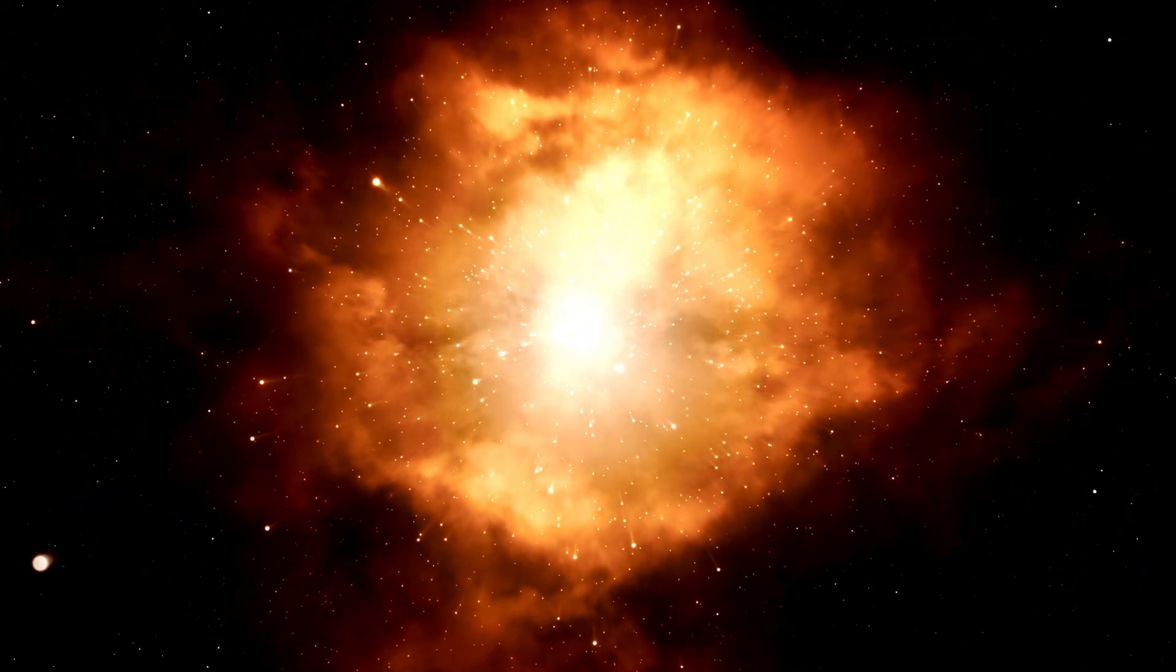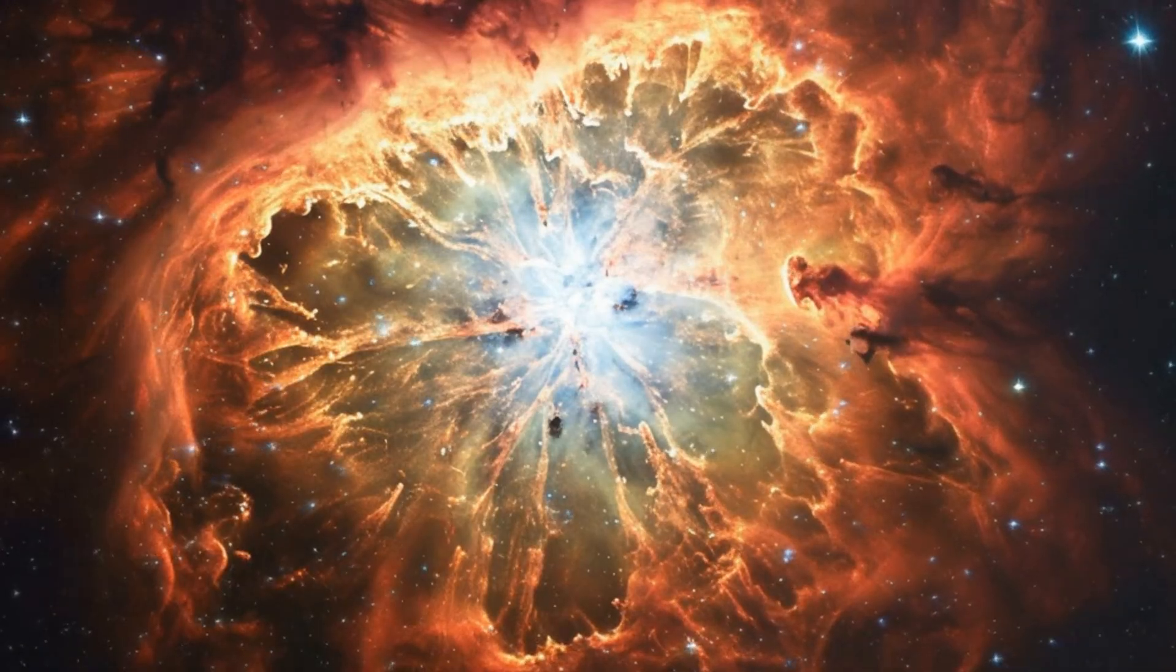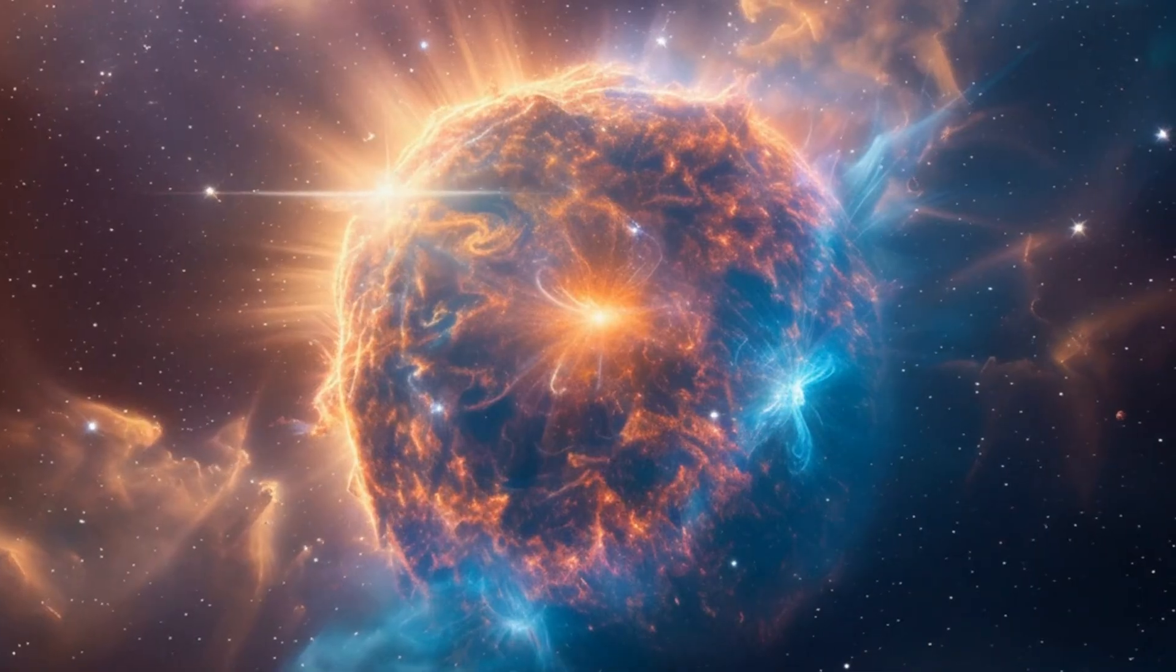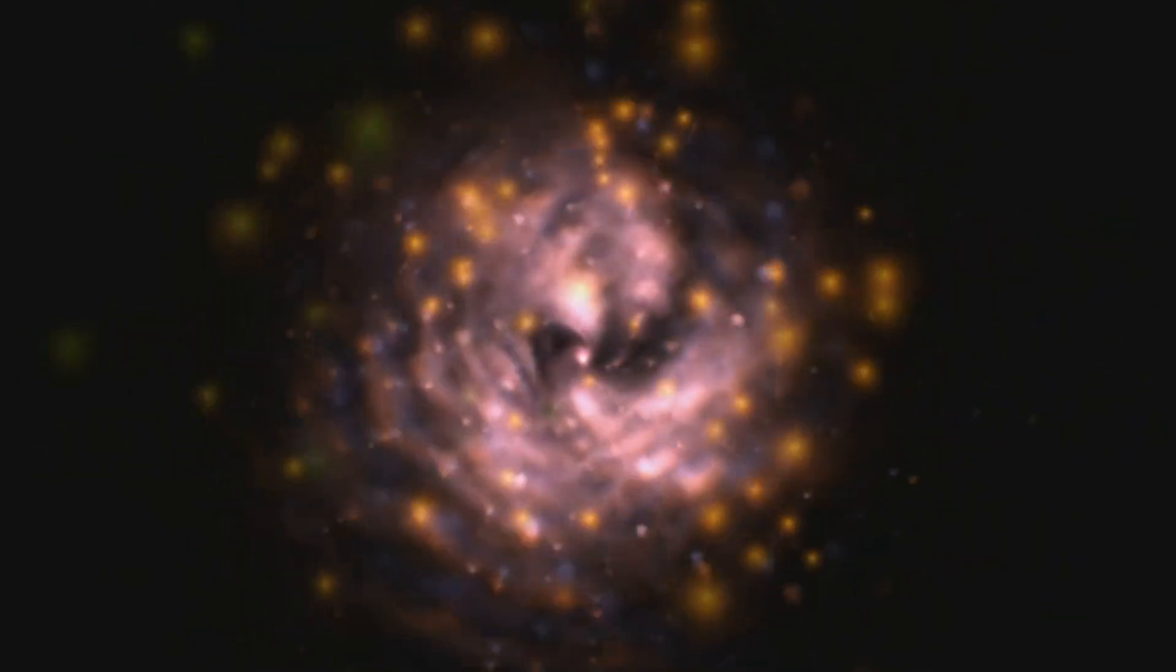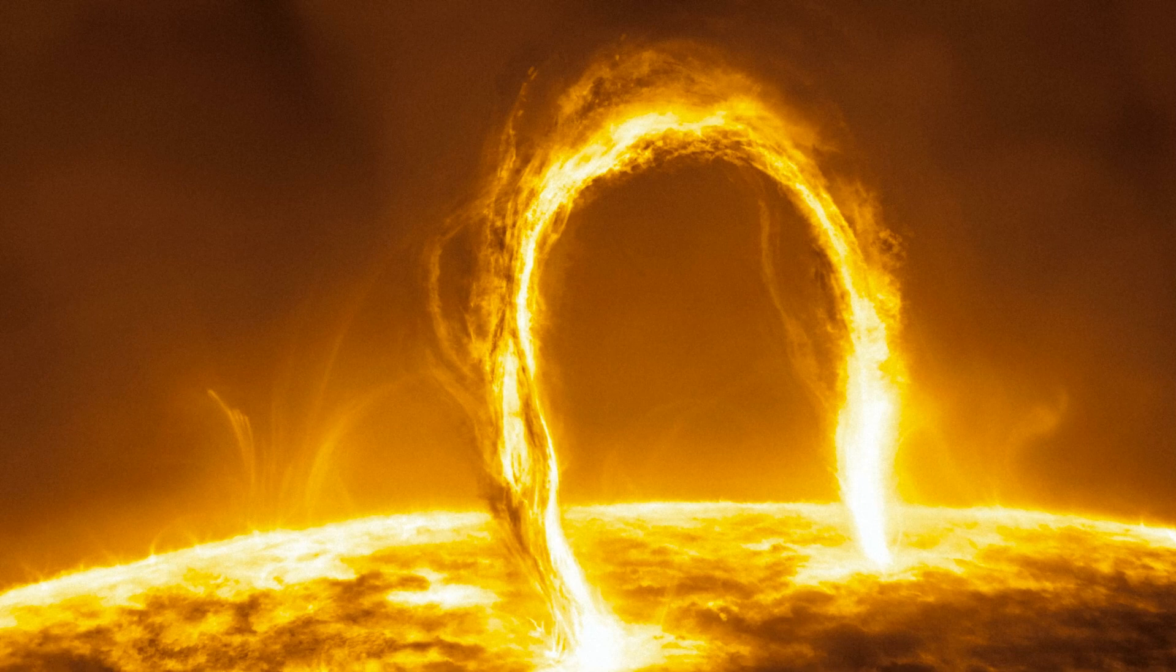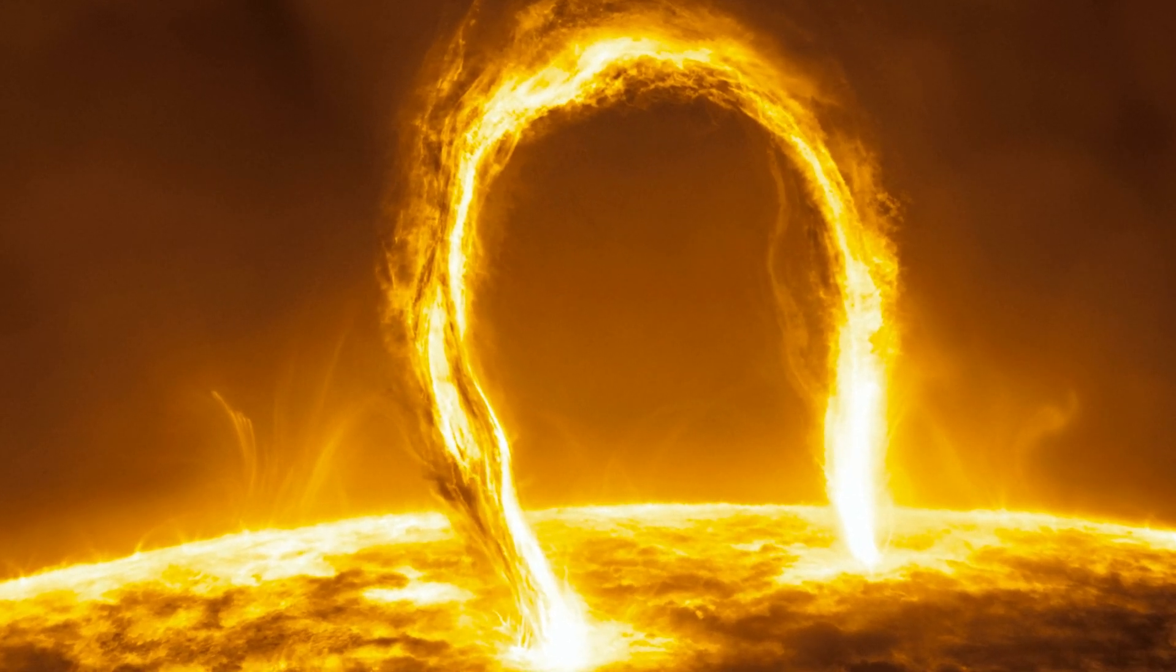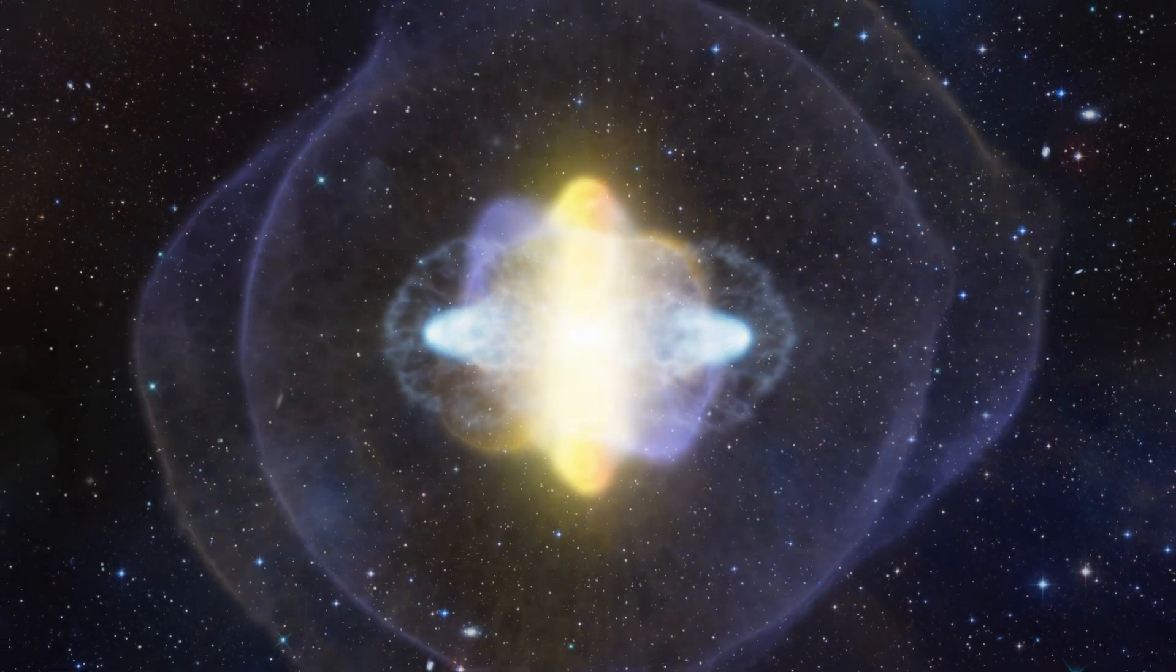Will Earth be destroyed by the Betelgeuse supernova? Since Betelgeuse is so far away from Earth, its explosion won't kill or even severely disrupt life here. According to astronomers, the safest distance from a supernova for human life is 50 light years, making Betelgeuse over 10 times more distant. Instead, everyone on Earth will get a show when a very bright star suddenly appears in the sky.